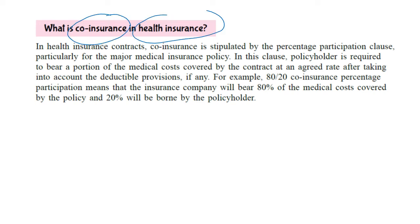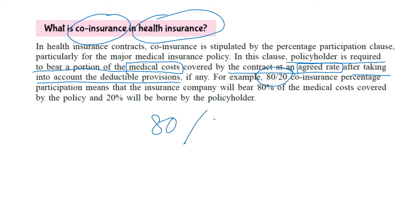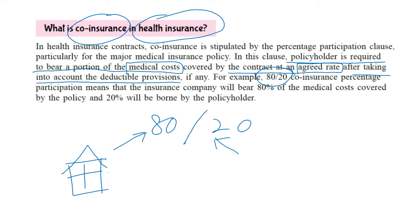For co-insurance in health insurance, the policy holder is required to pay a portion of the medical costs covered by the contract at an agreed rate — what percentage the policy holder must pay. After taking into account the deductible provision, if any, let's say the agreed percentage is 80-20. That means 80% will be covered by the insurance company and 20% will be borne by the policy holder.